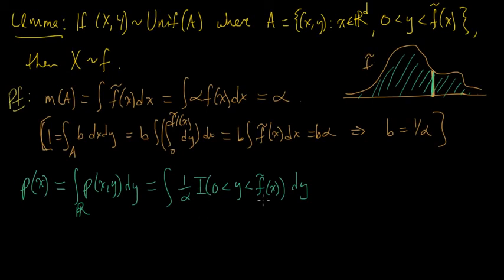And this is a constant, so it comes out. And this is just the indicator, so this is just 0 everywhere except for this interval, 0 to F tilde X dy, and so it's just 1 over alpha, F tilde of X.